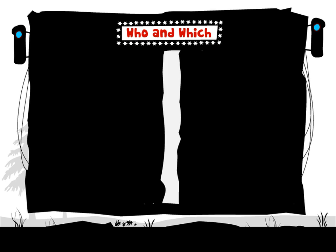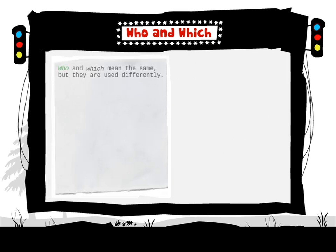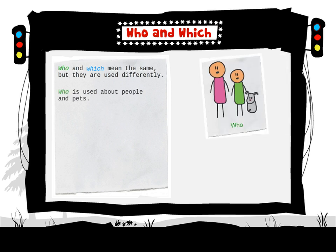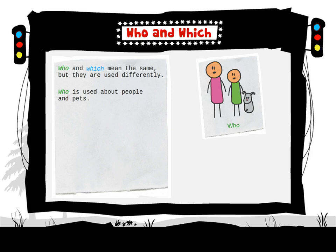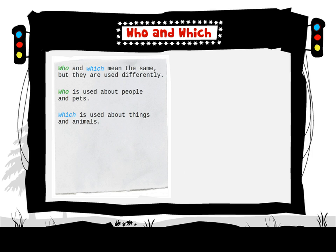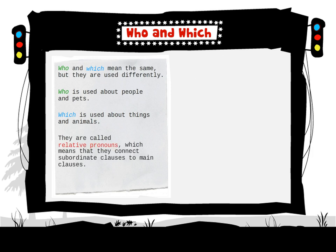Who and which mean the same, but they are used differently. Who is used about people and pets. Which is used about things and animals. They are called relative pronouns, which means that they connect subordinate clauses to main clauses.